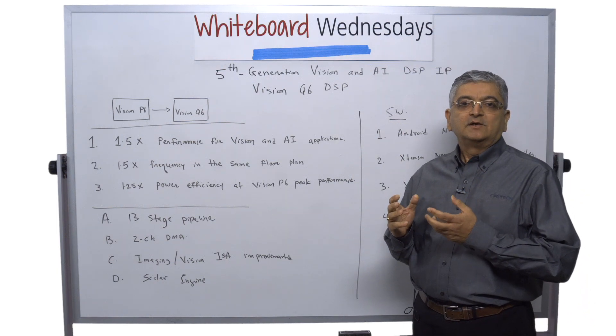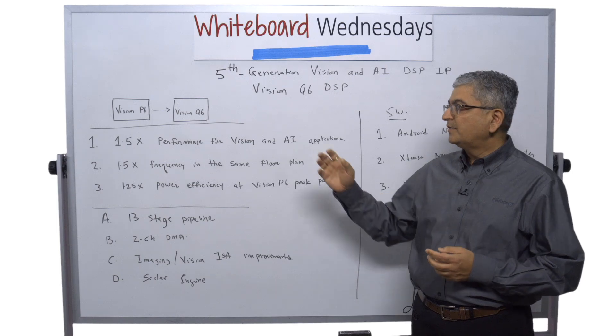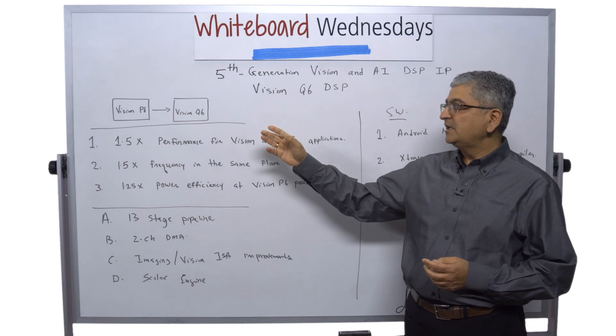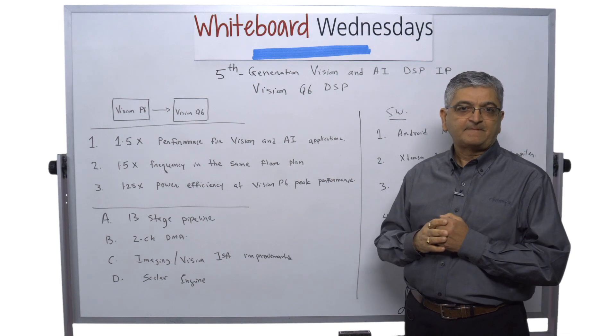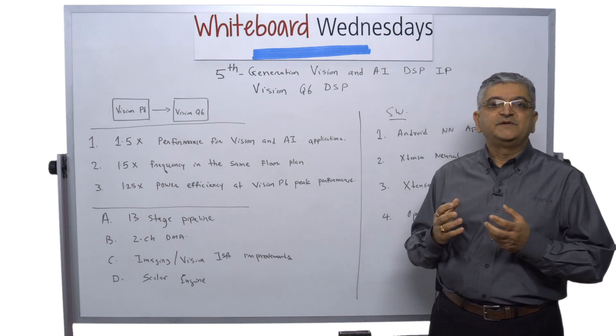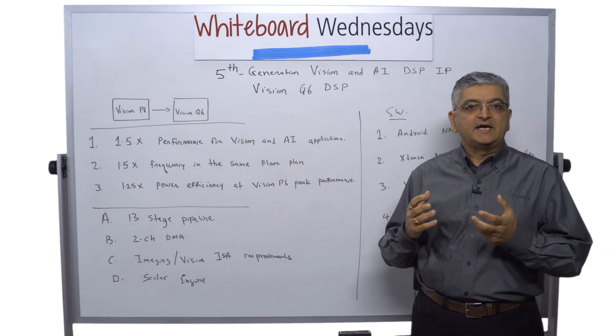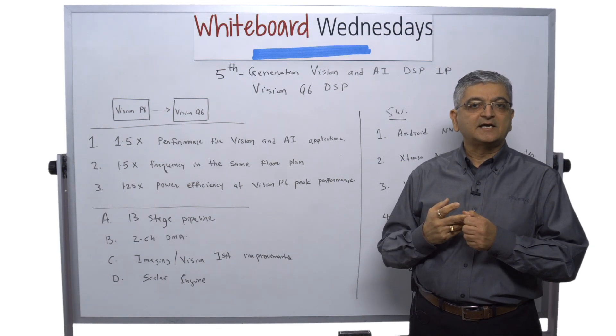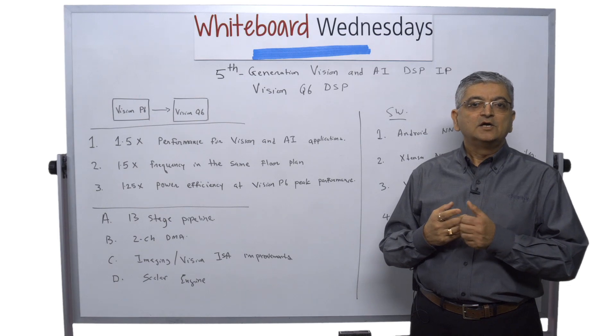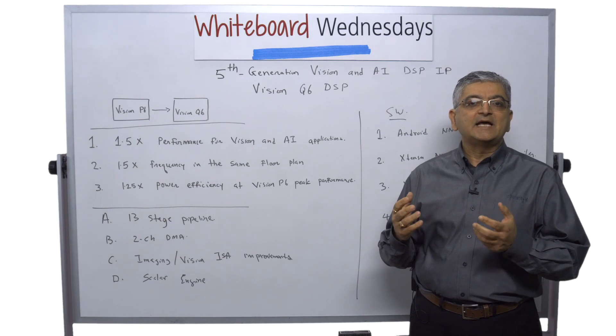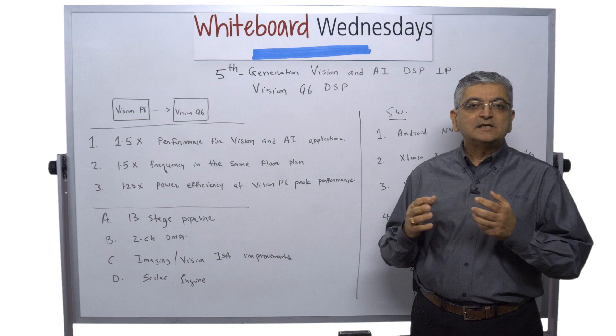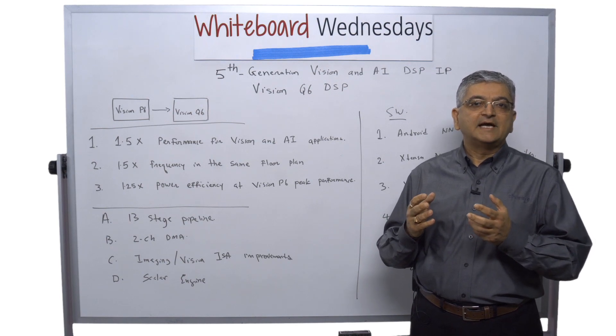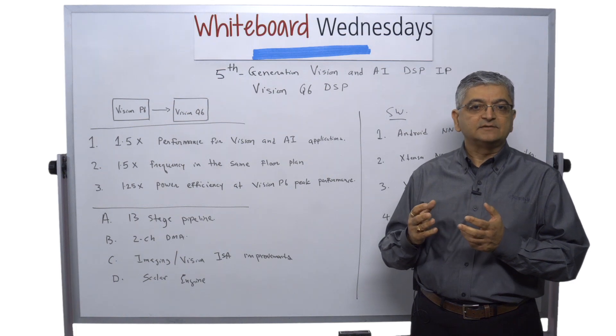With introduction of Vision Q6 DSP, we are going from our fourth generation Vision P6 DSP to Vision Q6 DSP. As you know, our Vision DSP is used in mobile market, in automotive market, in surveillance market, in AR, VR market, to offload AI and Vision DSP. All these markets are looking for an offload engine that can work with both AI and Vision.